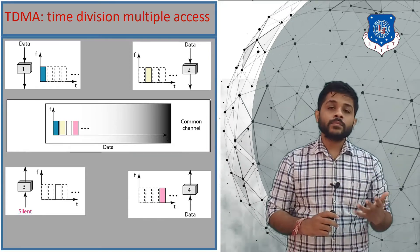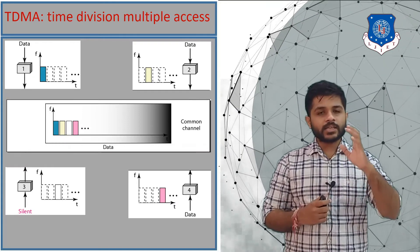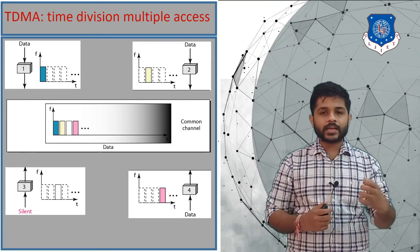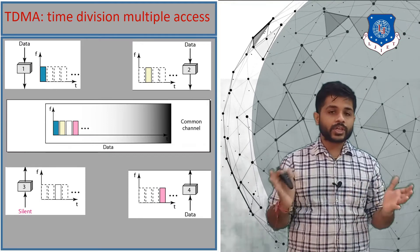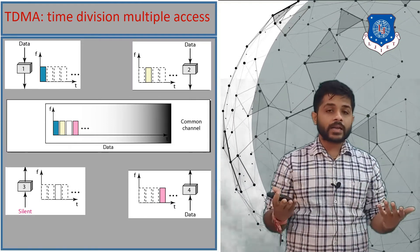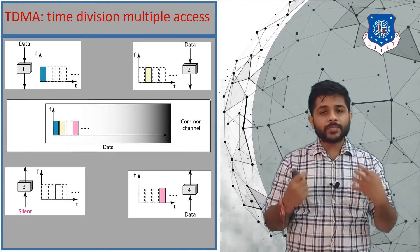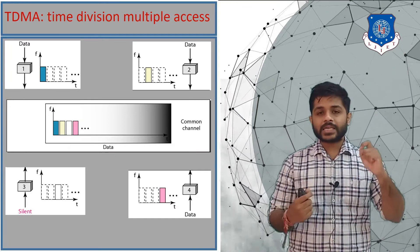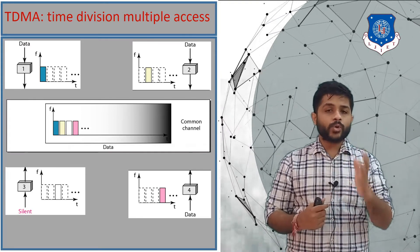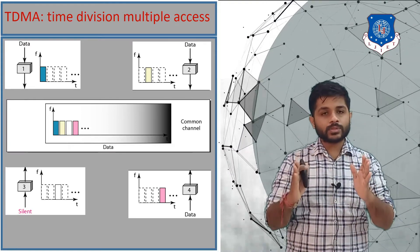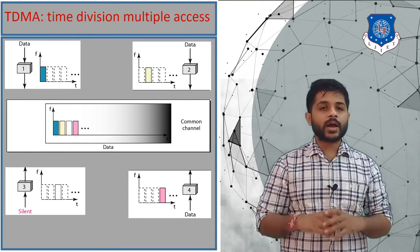Each device can send data only within its respective five-second slot. If their slot is missed or they have nothing to send, they cannot use another slot. The advantage of TDMA is that each station can send data at the maximum rate with no bandwidth restriction. The only flaw is that they can use the bandwidth only for a particular amount of time.